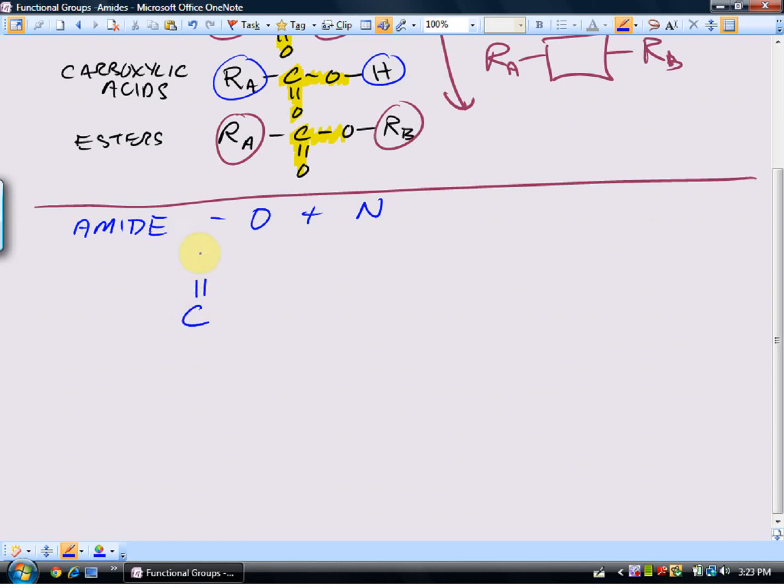It has the carbon-oxygen double bond. We've seen that before. But now that carbon-oxygen double bond on one side is connected to a nitrogen. Now, if we think about it, every carbon must have four bonds. So right now we see three bonds in the carbon, so there has to be something connected here.